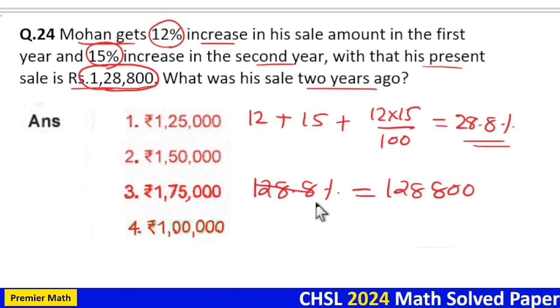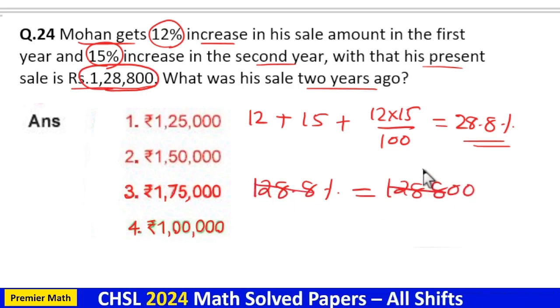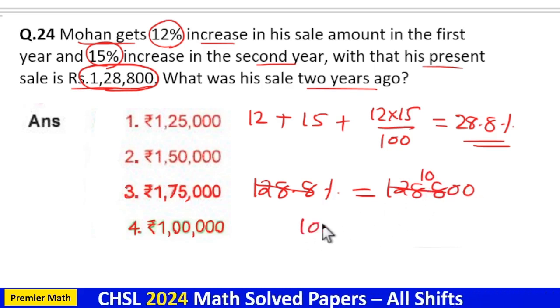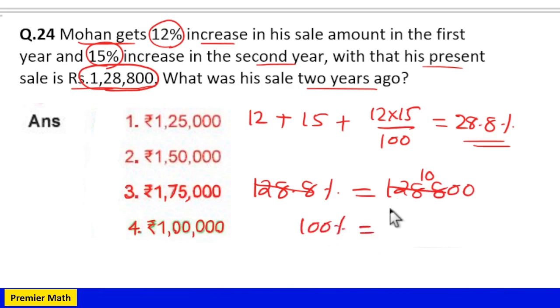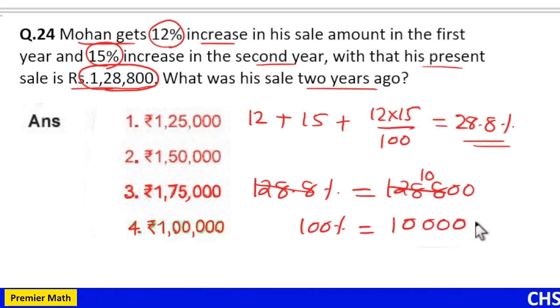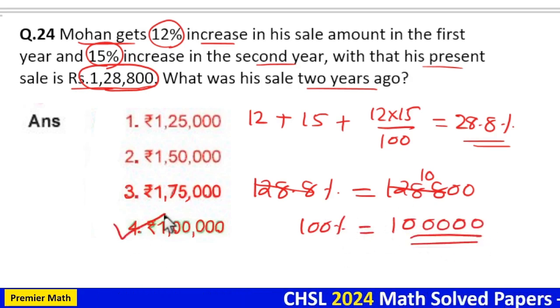128.8 into 10 is equal to 1288, so 1 percentage is equal to 1000. This means 100 percentage, which is the initial sale, is equal to 1 lakh. 1000 into 100 is 1 lakh. So option 4 is your answer.